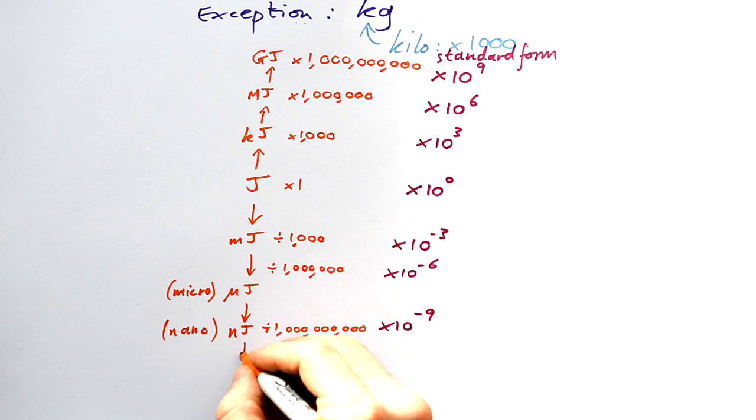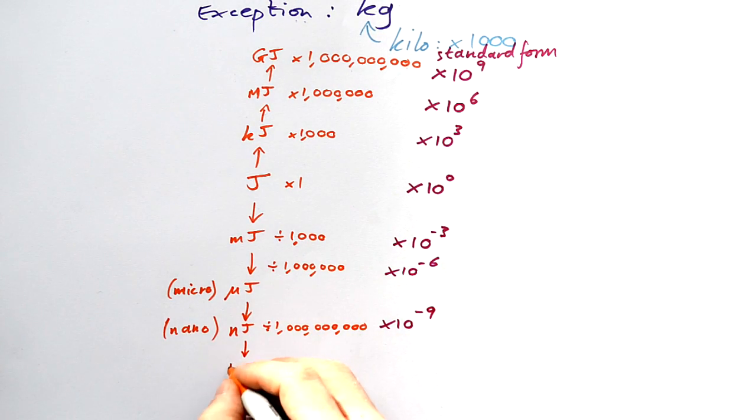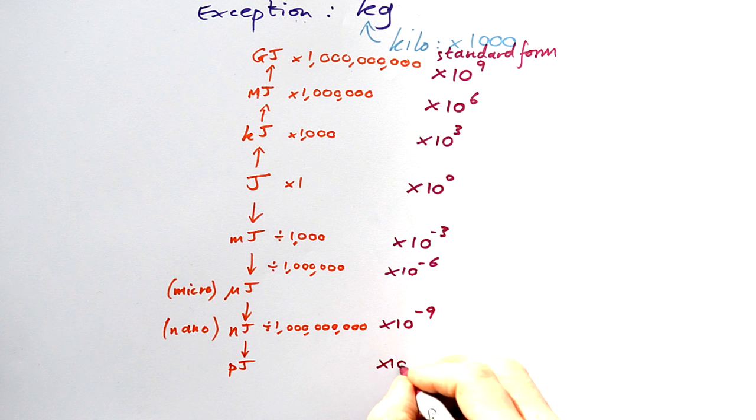There is actually one more that we can do as well, and that's go down to a picojoule. I can't bother to write out all the zeros, but that's going to be times 10 to the minus 12. There is one more as well - we go down to times 10 to the minus 15. That gives us a femtometer, and you'll see that come up in the strong nuclear force. Have a look at my particle physics video to see where that comes into play.